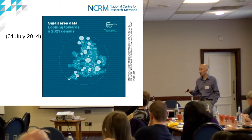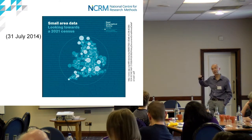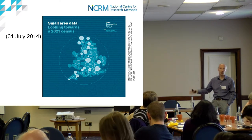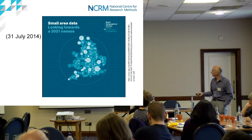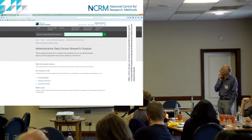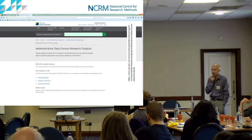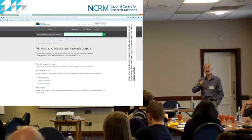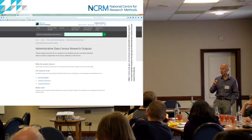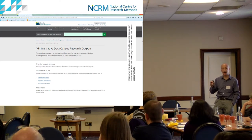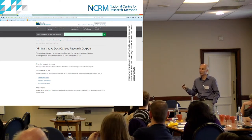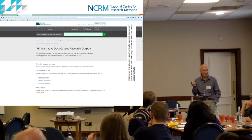Those options were considered and crossed off along the way as not being workable. One particular challenge is that a lot of those methods - especially anything survey-based - don't produce the small-area data. You can use national survey data to get good estimates for all sorts of things but you can't bring it down to the local level. If you go to the ONS website and search on 'admin data census research' you will see the beginnings of some outputs - all experimental statistics.